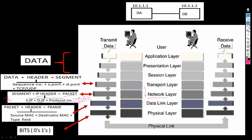The IP protocol will hand over this packet to layer 2, the data link layer, where the ARP protocol works. ARP protocol will add its header to the packet and this format will be called a frame. This header includes source MAC, destination MAC, and a type field. Since we are using IPv4, the type field will be 0x0800.